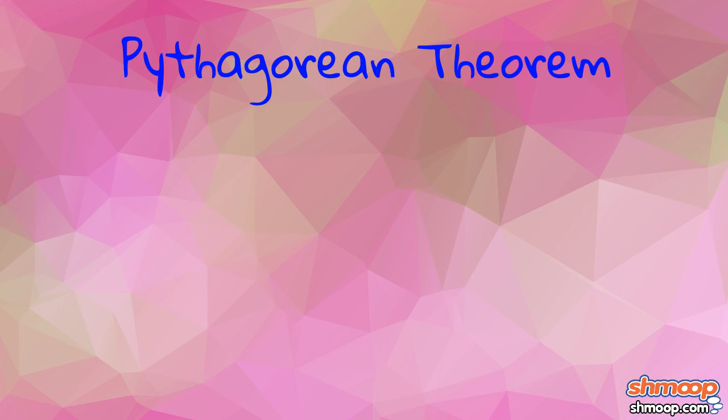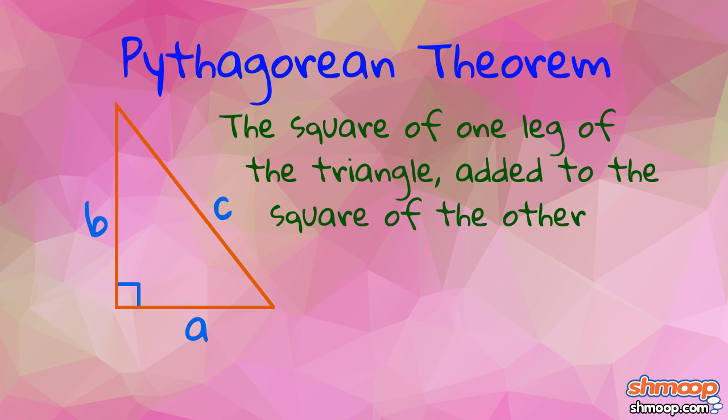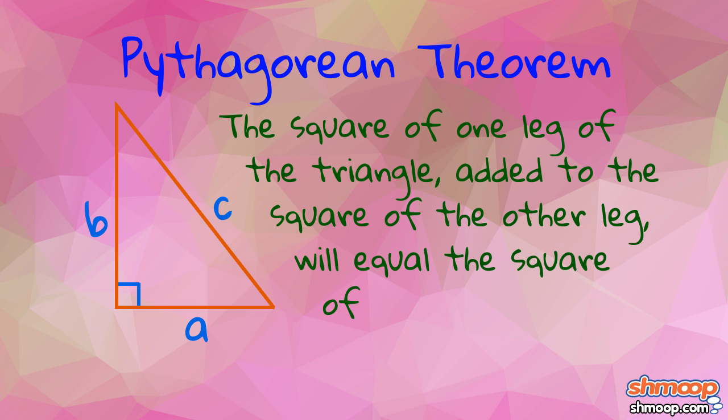which says that, when dealing with a right triangle, the square of one leg of the triangle added to the square of the other leg will equal the square of the hypotenuse. Or expressed algebraically, a squared plus b squared equals c squared.